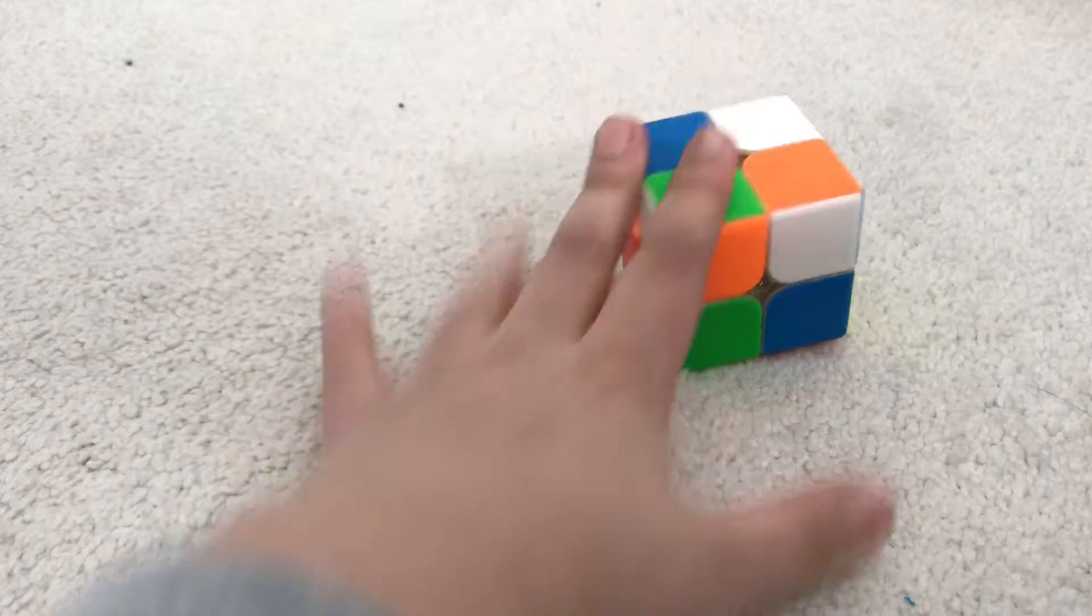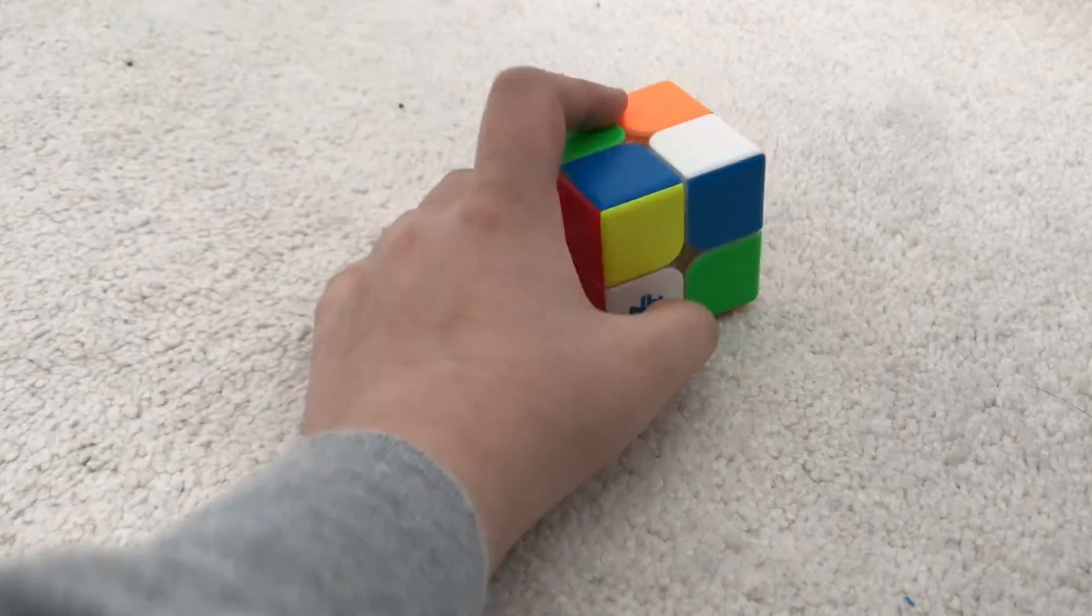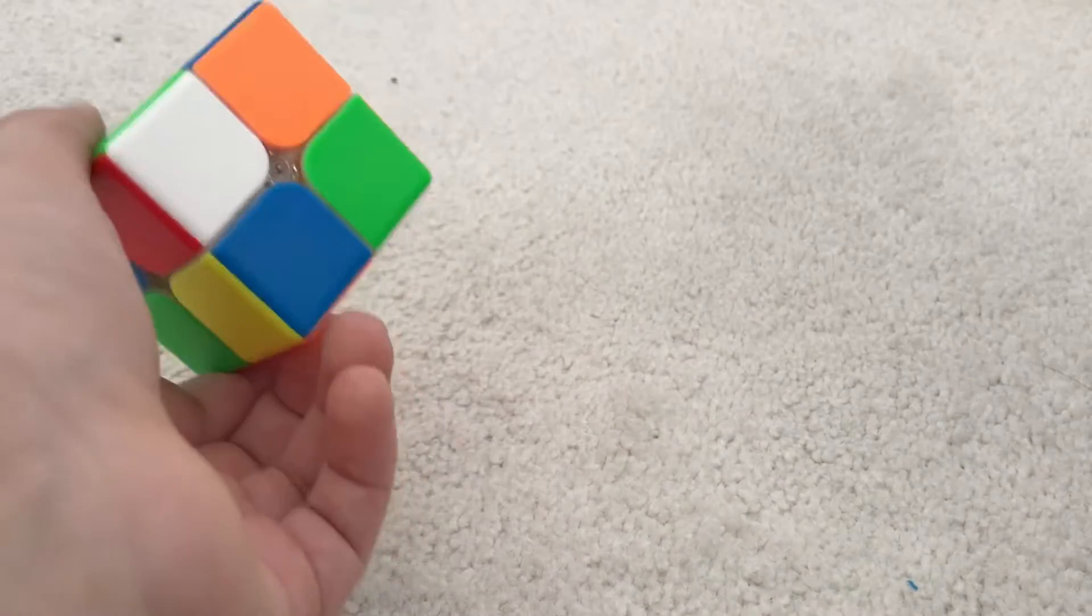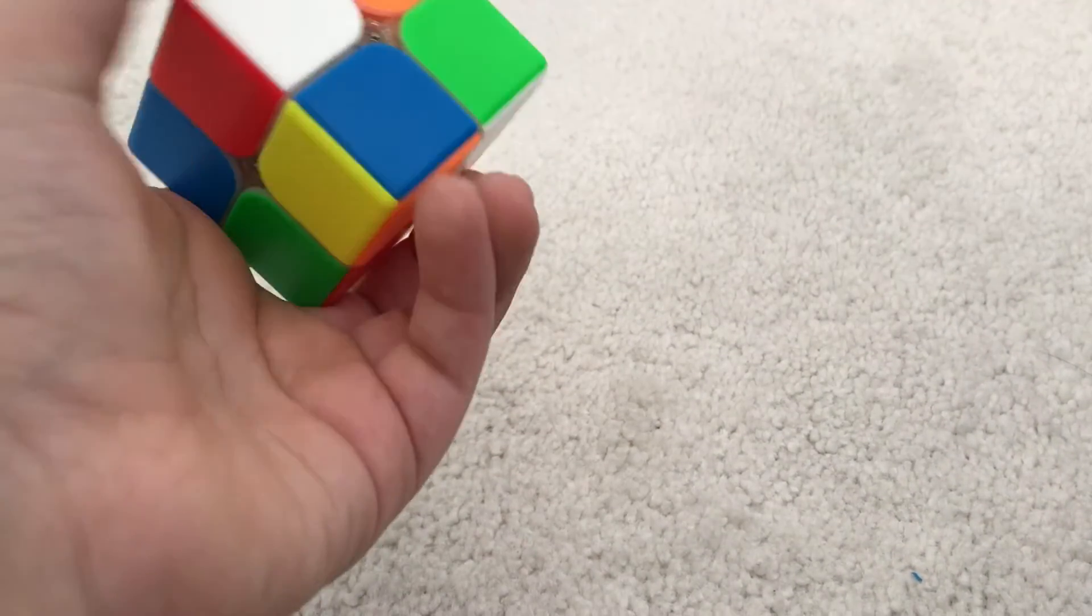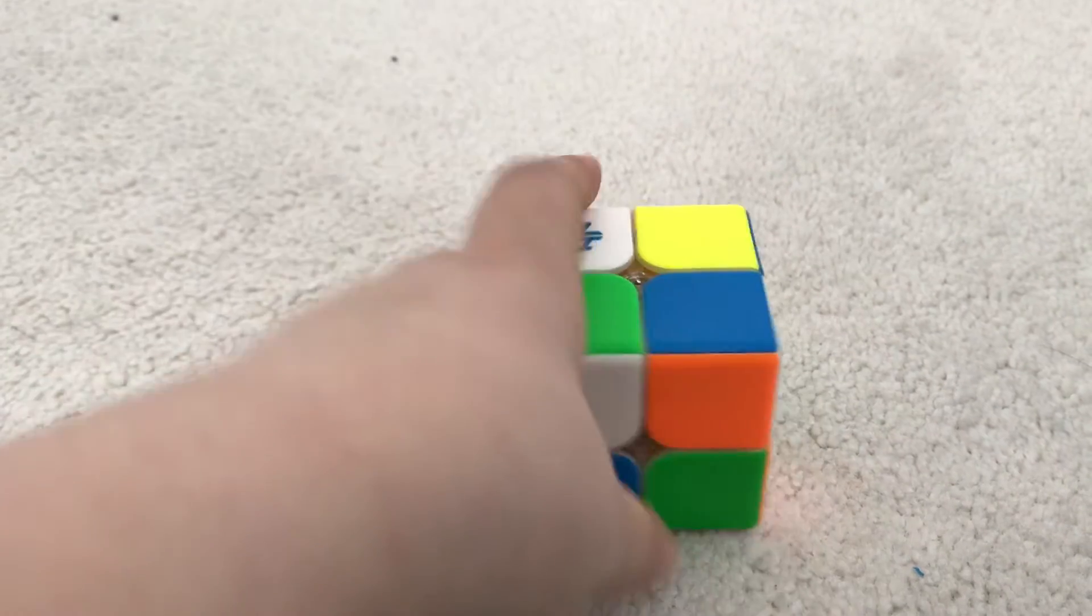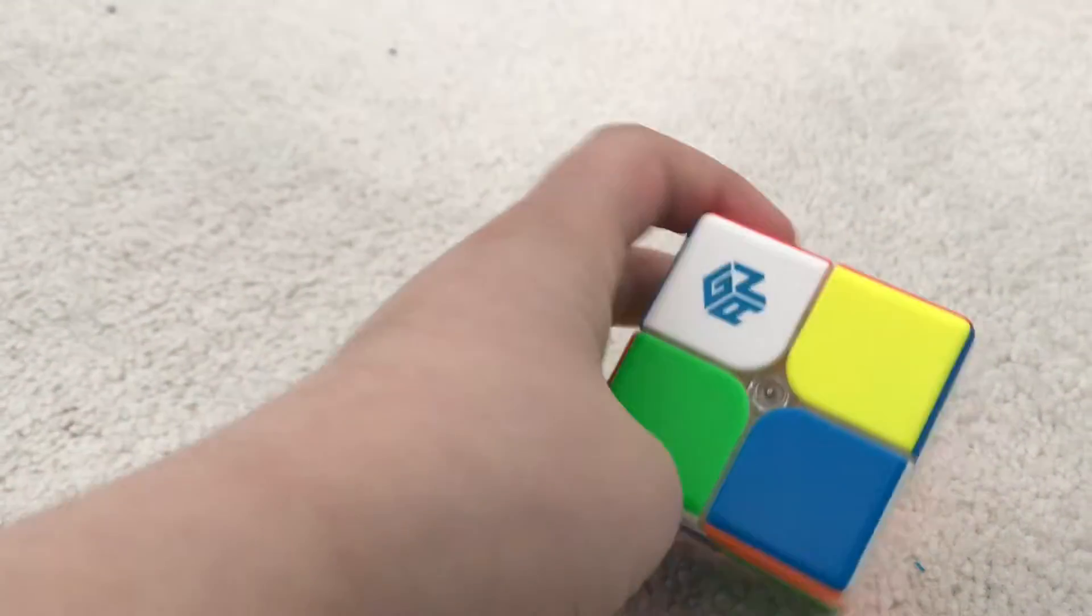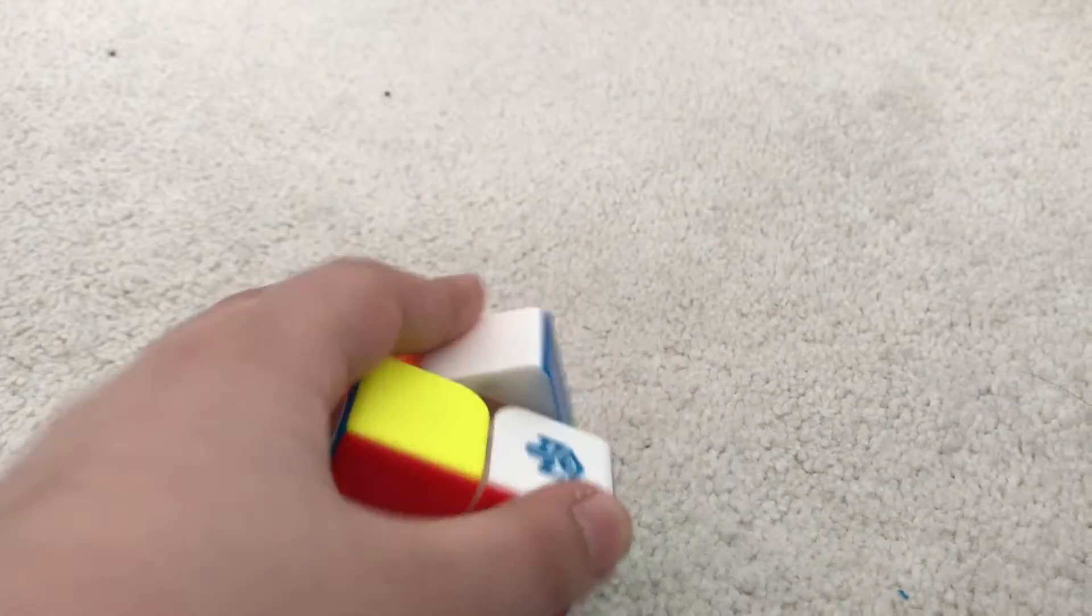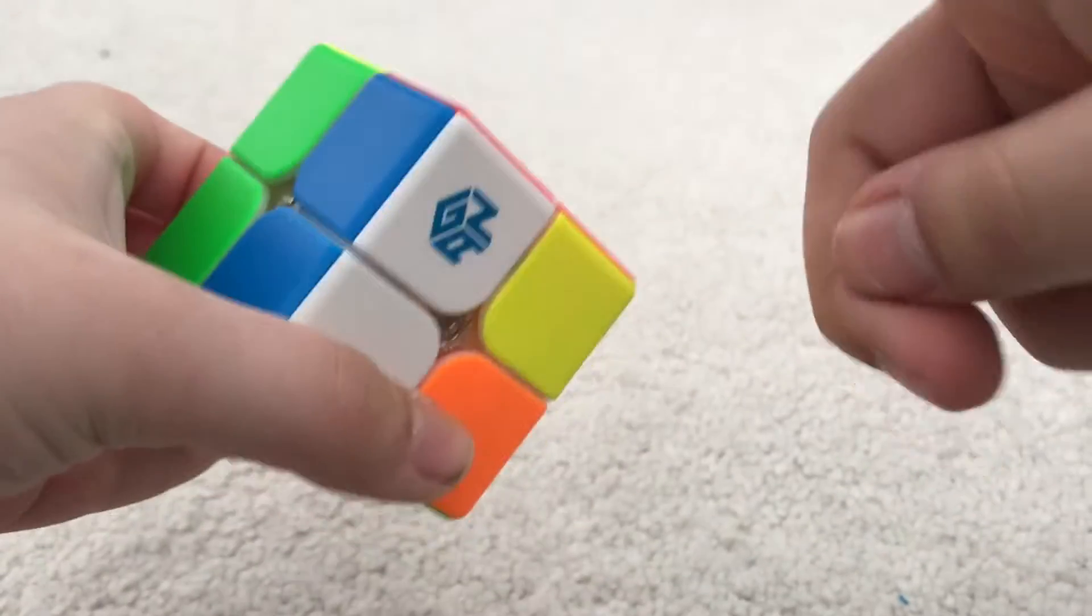Now as you can see I just scrambled this, so let's get into the video. First we're going to want to solve the white side. Now the white side can be anywhere. There's no center piece which means there's no side, so you could put the white side anywhere on the cube. There's no searching around for middle pieces, there's just corner pieces which have three colors on them.